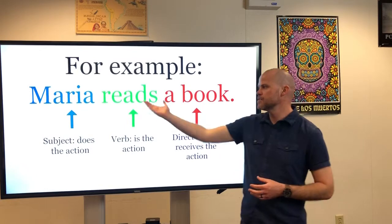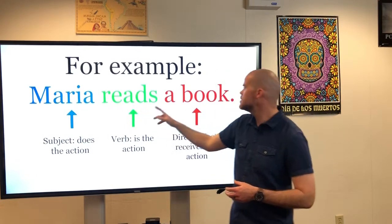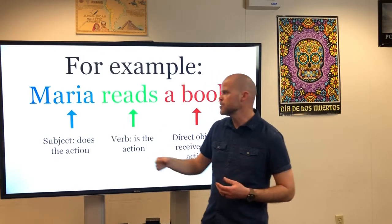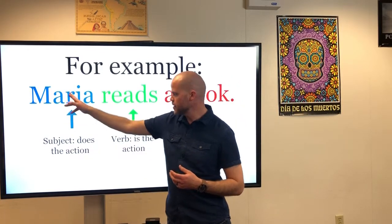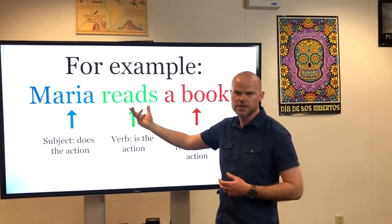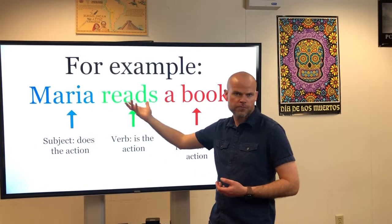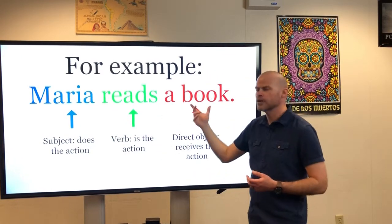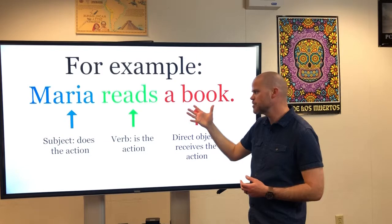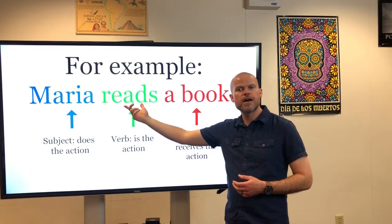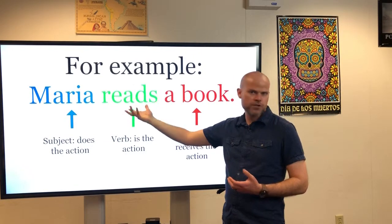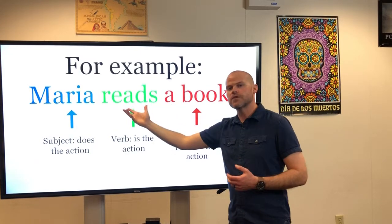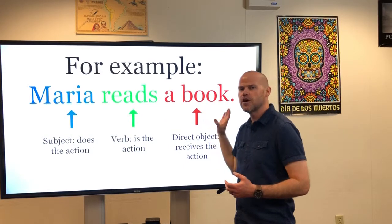For example, we have a sentence here in English: Maria reads a book. The subject of the sentence — the person or thing doing the action — is Maria, color coded in blue. The verb of the sentence is reads. And the direct object of the sentence is a book. How do I know that? We take the verb to read and ask what or who receives the action. What is being read? A book. That's how we find the direct object of the sentence.